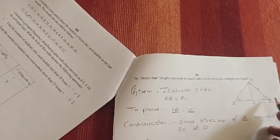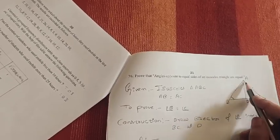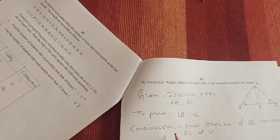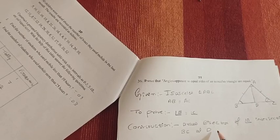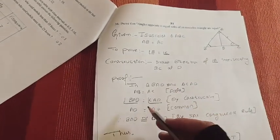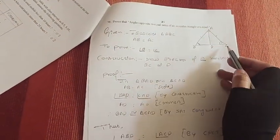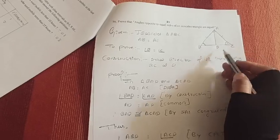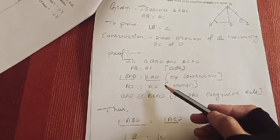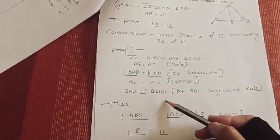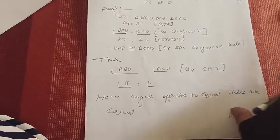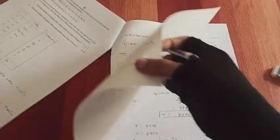Given: isosceles triangle ABC where AB is equal to AC. To prove: angle B is equal to angle C. Construction: draw the bisector of angle A, intersecting BC at point D. Now consider triangles ABD and ACD. These two triangles are congruent by SAS postulate, using the equal sides, the bisected angle, and the common side. Hence angle B equals angle C, and the theorem is proved.